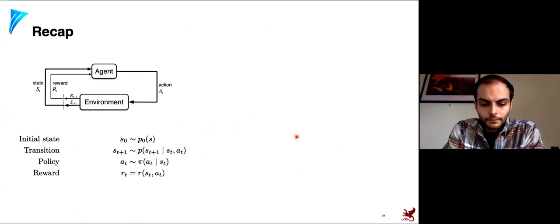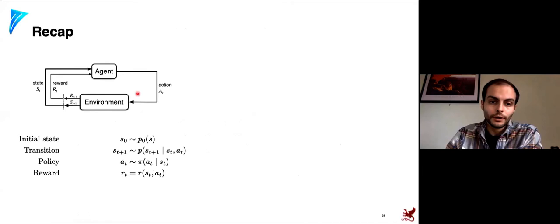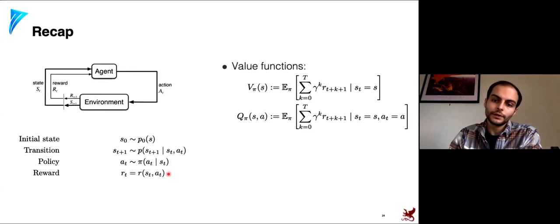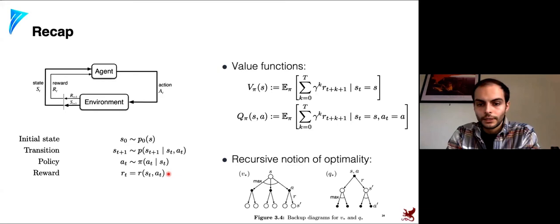These are the basic building blocks: the MDP is defined by the initial state distribution, the Markovian transition distribution, the policy distribution, and the reward function. We introduced the value function, defined recursive optimality, and showed how to compute it by unrolling the recursion forward and backward, analogous to dynamic programming.